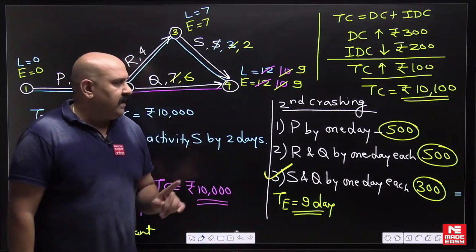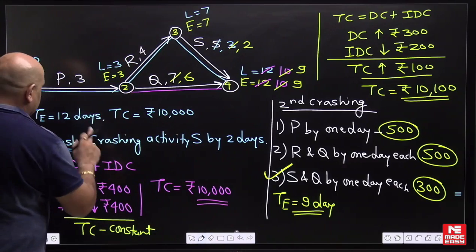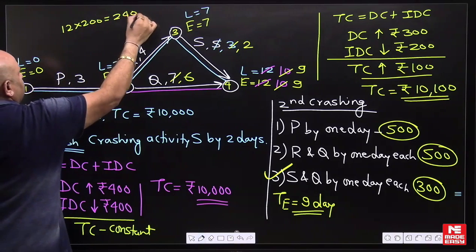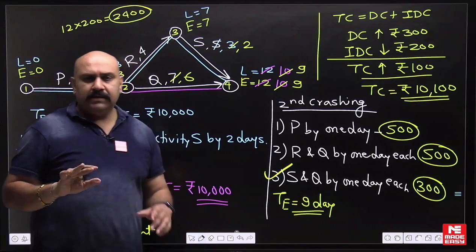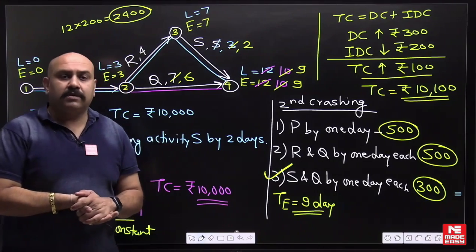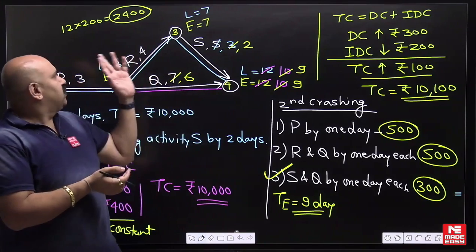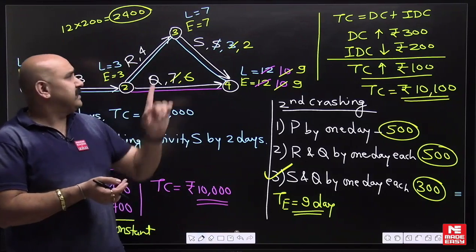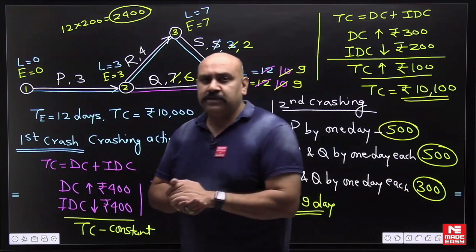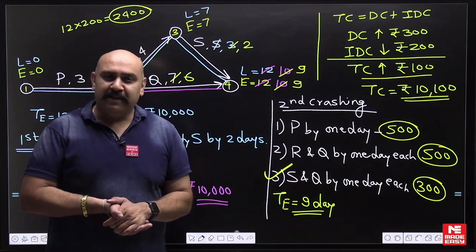The answer is rupees 10,100. In some solutions you will find 12,500 because they started by taking 10,000 as direct cost only and added 12 × 200 = 2,400 separately. Do remember: whenever they ask for total cost of the project, it means total cost under normal working condition. That was one of the good questions from crashing. Hopefully you liked it — please share and subscribe to the channel Medizy.